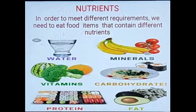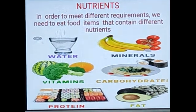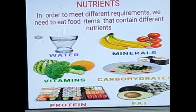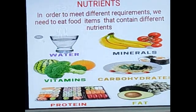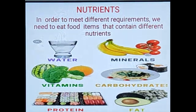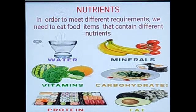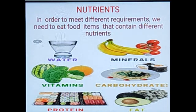We have learned the necessity of food. There must be something inside food that gives us energy, maintains our body, and keeps us fit. In order to maintain different requirements of the body, we need to eat different types of food items containing different types of nutrients. These nutrients include water, minerals, vitamins, carbohydrates, protein, and fat, which we will discuss one by one.